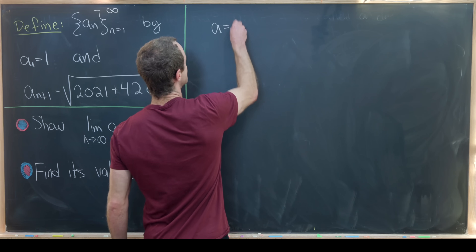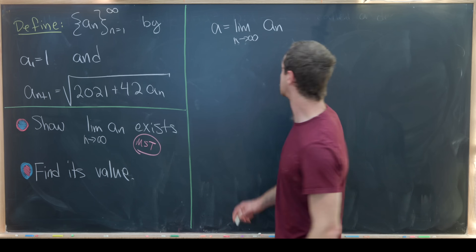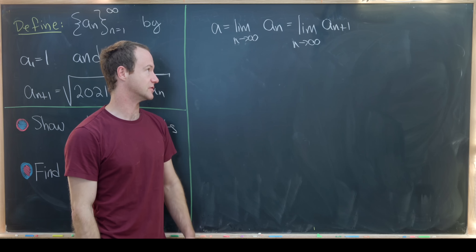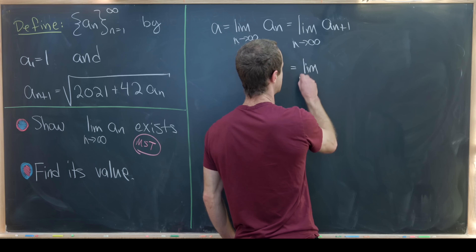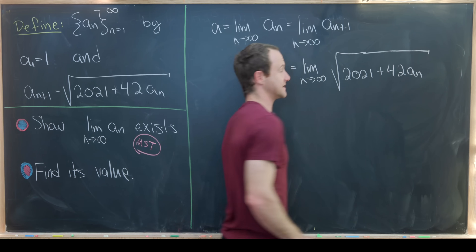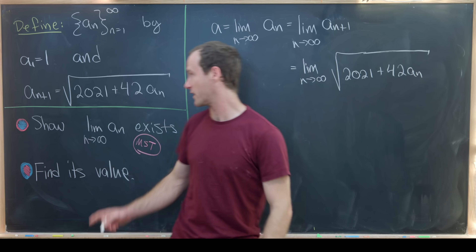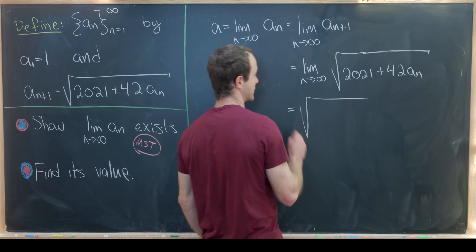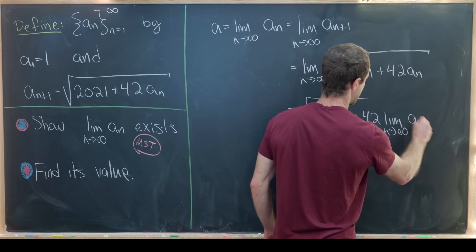Using the standard trick for recursively defined sequences, let a equal the limit as n approaches infinity of a_n, assuming it exists. That limit equals the limit as n goes to infinity of a_{n+1}. We apply the recursion to a_{n+1}: this becomes the limit as n approaches infinity of the square root of 2021 plus 42·a_n. Since the square root function is continuous for positive real numbers, we can bring the limit inside.